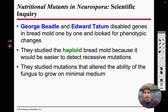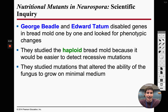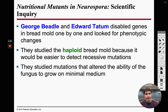After that, Beadle and Tatum disabled genes in bread mold and looked for phenotypic changes. Bread mold is actually a haploid cell, not diploid like us — it only has one of each chromosome. Since it only has one of each chromosome, that means for any particular trait it's only going to have one allele.